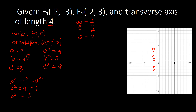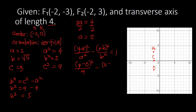We can now write the standard equation of the hyperbola. Since this is vertical, the form is (y − K)²/A² − (x − H)²/B² = 1. Plugging in K = 0, A² = 4, H = −2, B² = 5, we get (y − 0)²/4 − (x − (−2))²/5 = 1. Simplifying, this becomes y²/4 − (x + 2)²/5 = 1. That is the standard equation.